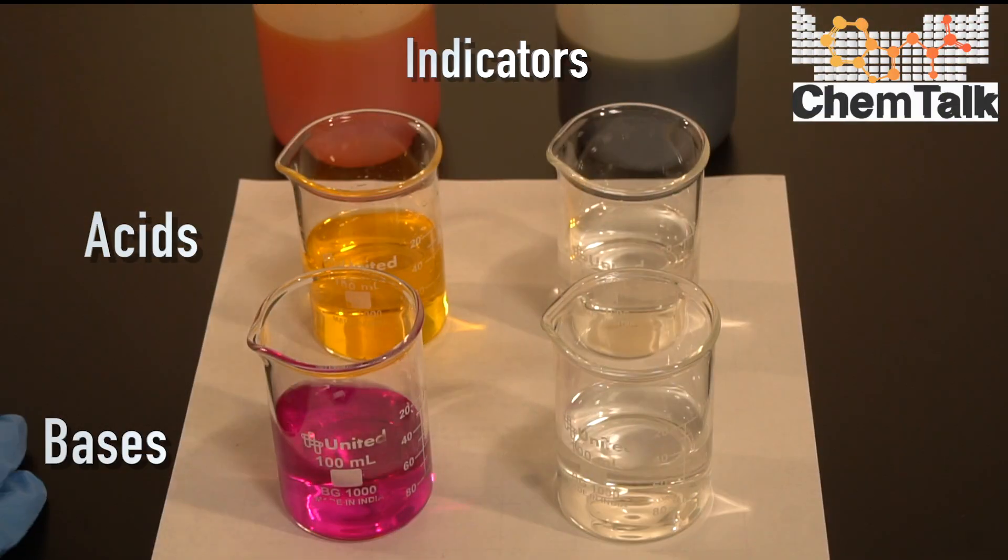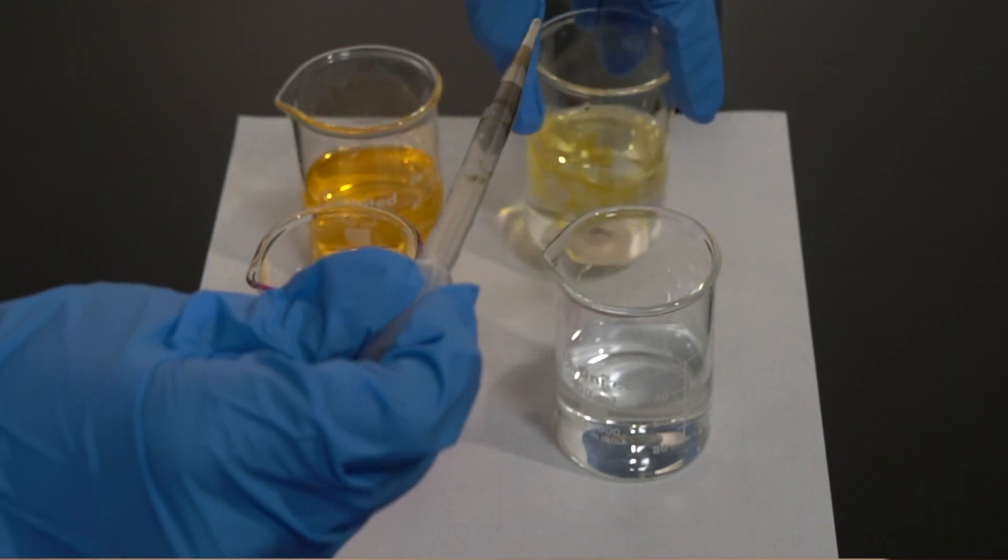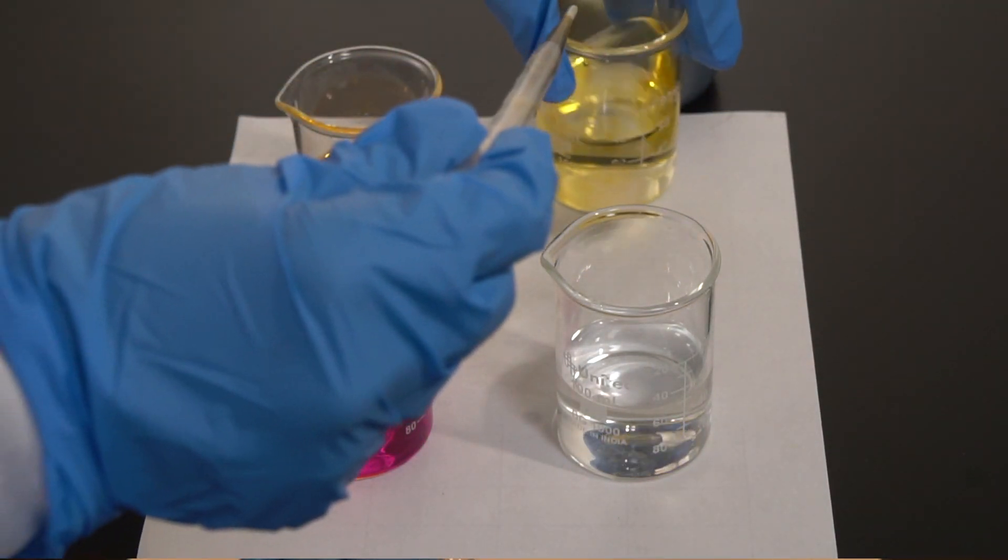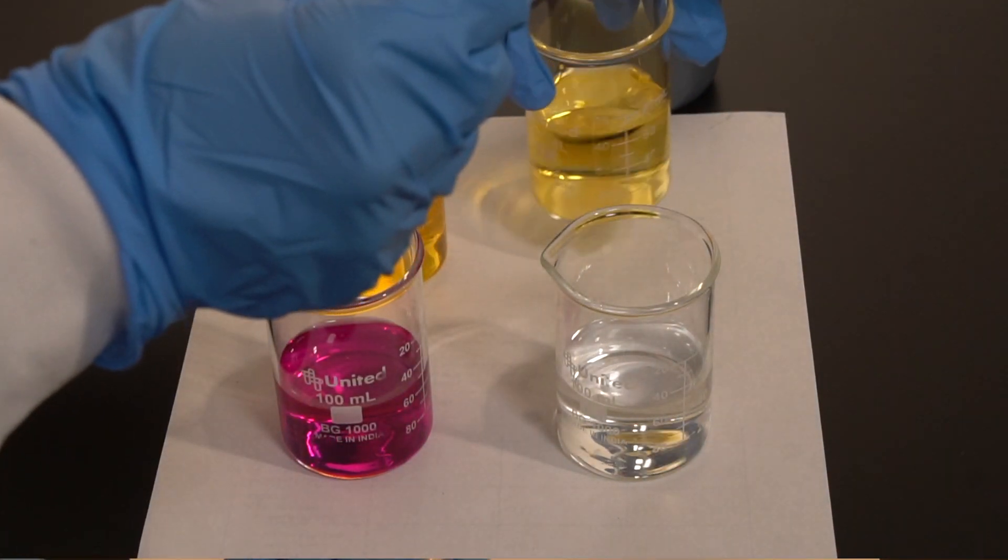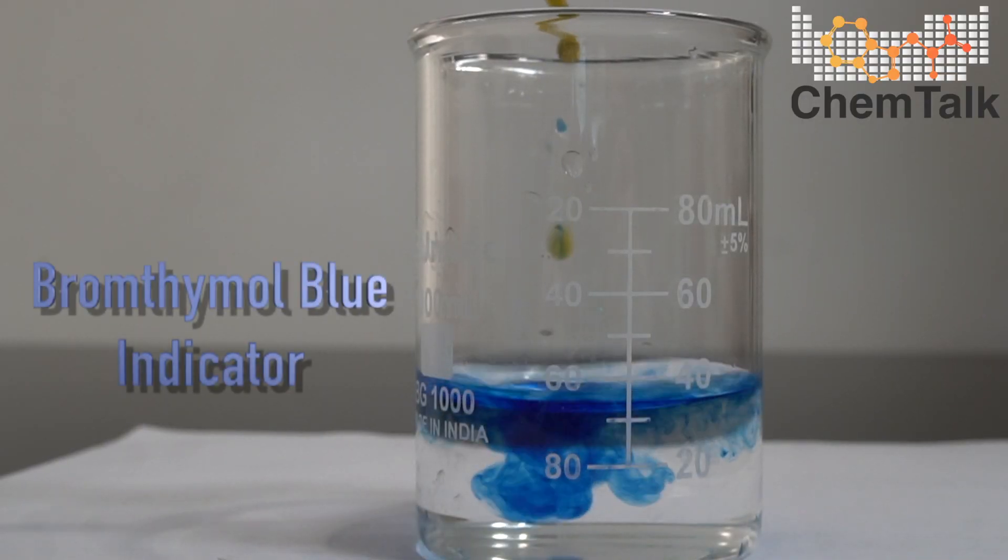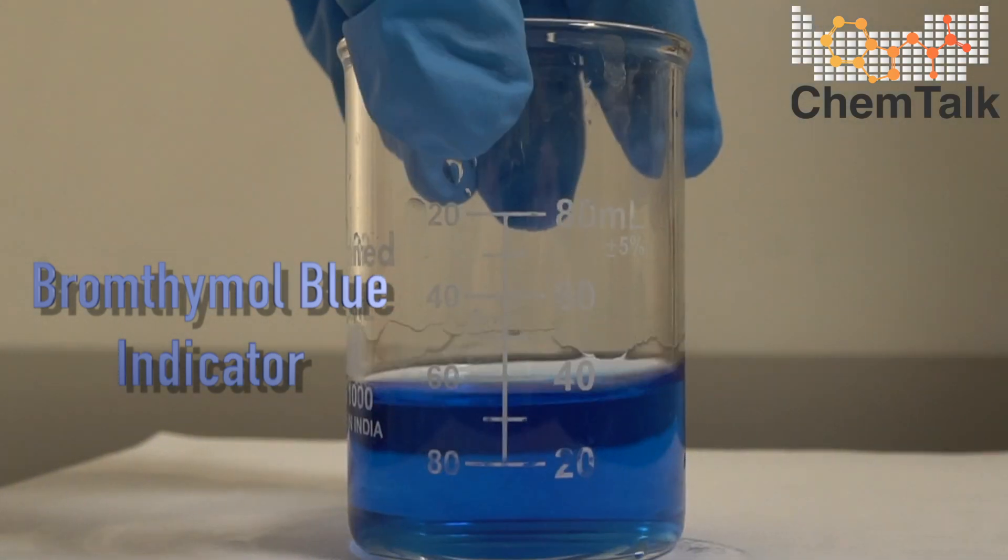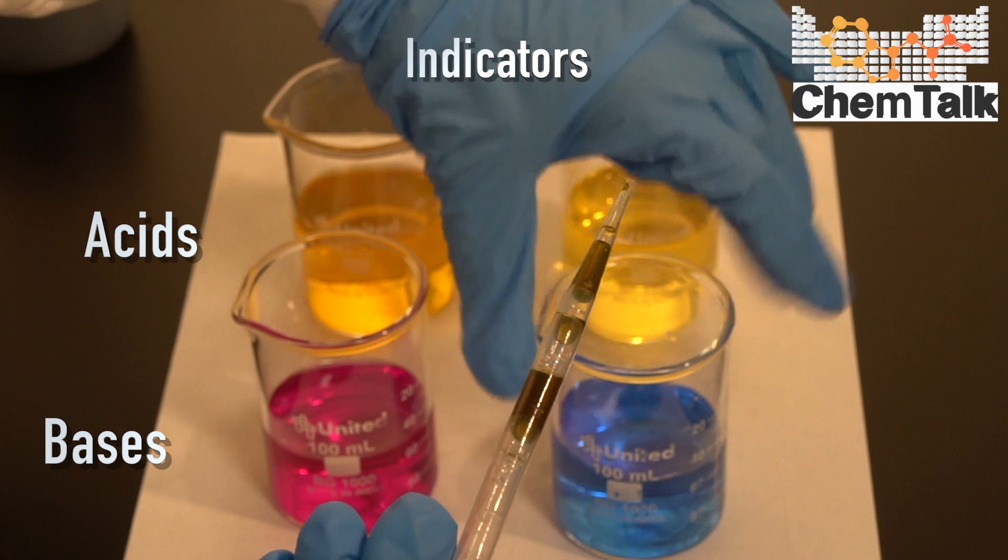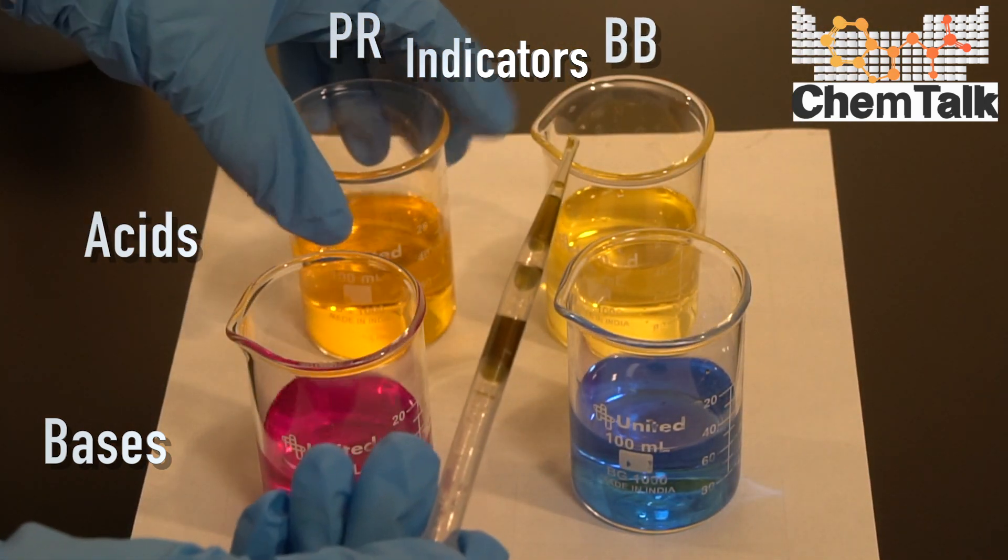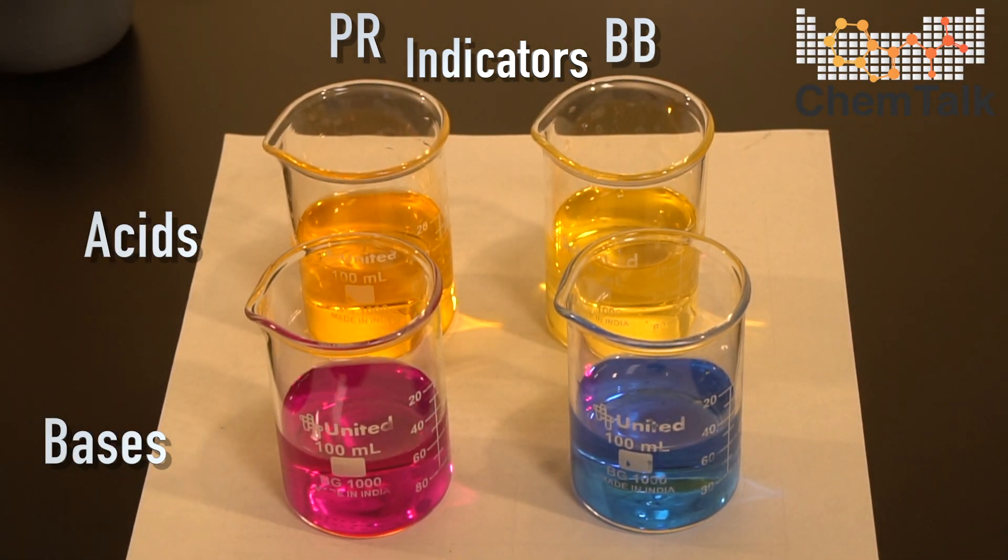So now for the bromothymol blue. So first into the acetic acid, looks like that's also going to be yellow. All right, so our acids are yellow. It's a little more pale yellow. And potassium hydroxide. So we got that dark blue color for our base. So again, phenol red on this side, bromothymol blue on this side. So this is what we need to compare it to when we look at our soil samples.